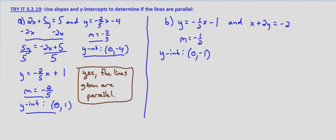With our second equation, we need to solve for y, so we subtract x from both sides. So 2y equals negative x minus 2.